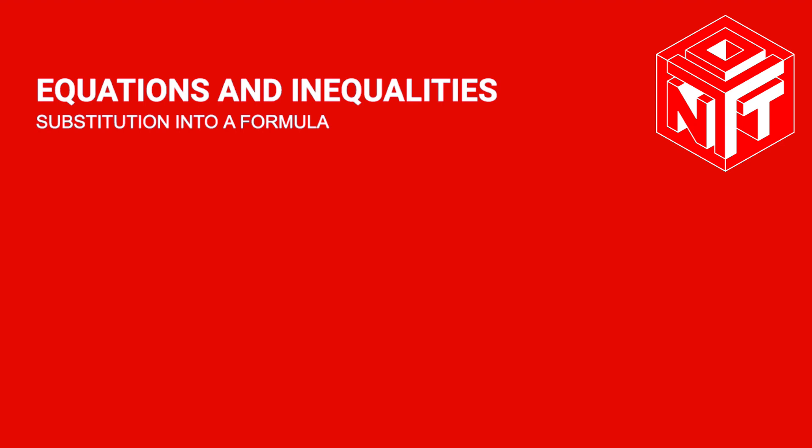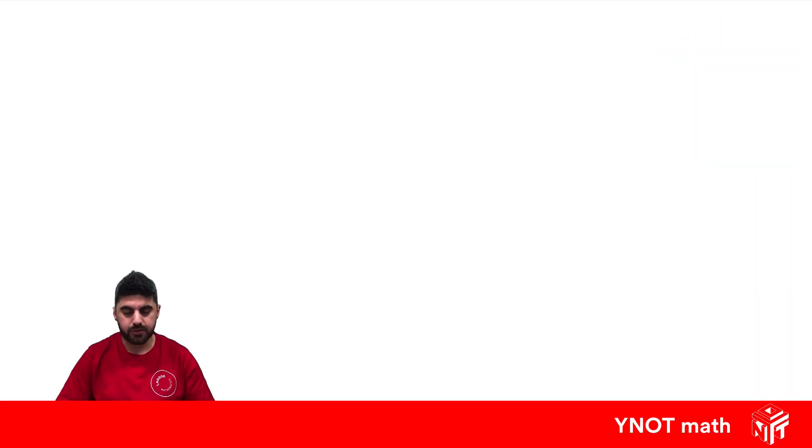Substitution into a formula. A formula is just a rule or equation containing two or more pronumerals, one of which is the subject of the equation. The subject is the one that's by itself and it might look something like this: E equals mc squared. Here, E is the subject of this formula and we have three pronumerals. If we know the value of two of them, we can find the other one.